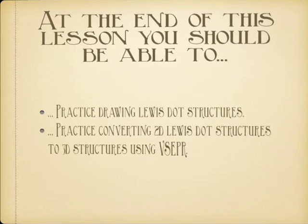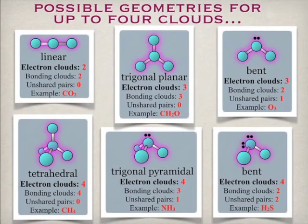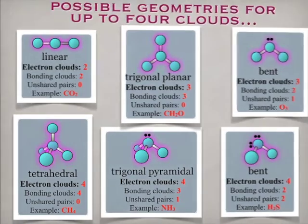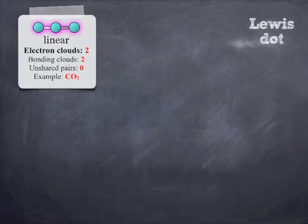And so in the last lesson I talked about the six geometries that you'll see when you're dealing with up to four clouds. And I listed examples of each one, but I thought it would be nice to see what those look like in regards to actual Lewis dots and actual 3D structures. So what we'll do is we'll run through each of these and show you the Lewis dot, and then we'll show you the 3D structure for each and how to draw those.